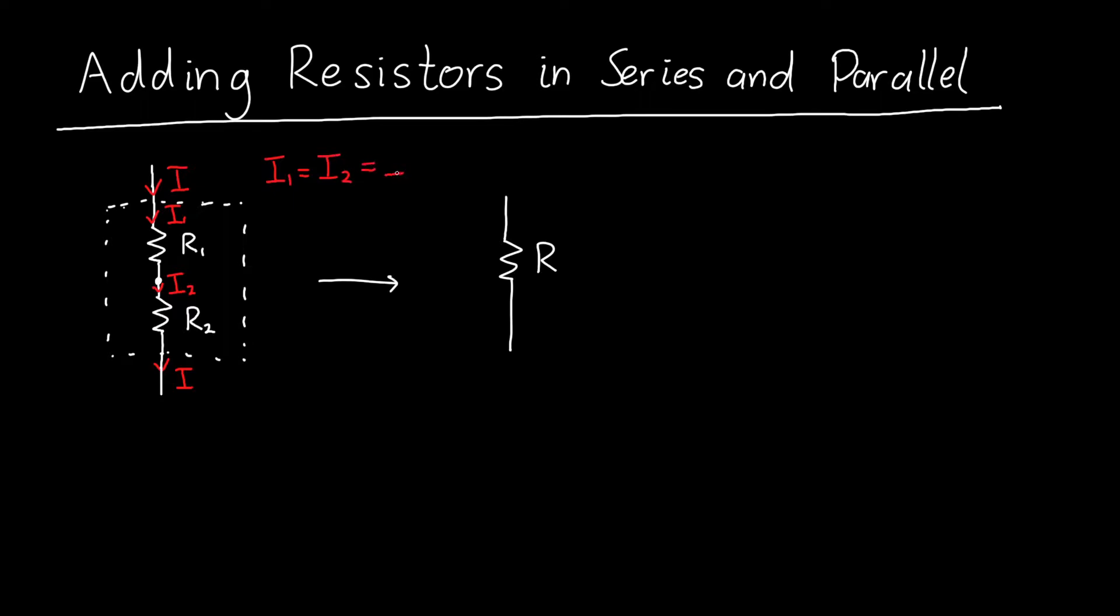Which is equal to the current flowing through this entire box. Now, what about the voltage across this entire box, V? Well, that voltage is just the sum of the voltages across the individual resistors, so V1 and V2.